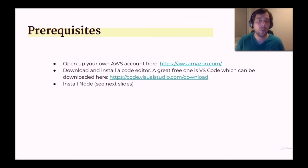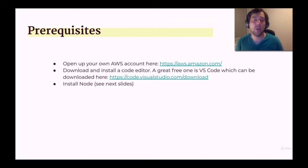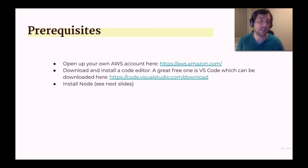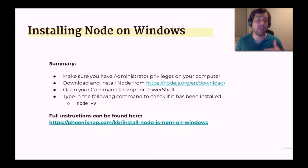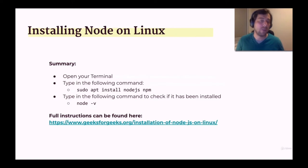What are some prerequisites for this course? First and foremost, if you want to deploy on AWS, you'll need an AWS account, which you can open at aws.amazon.com. Second, you'll need a code editor — I'm going to be using VS Code because it's a great and free code editor. I also recommend JetBrains WebStorm if you have it, but that's a paid editor. Finally, you'll need to install Node, which is very easy — just a couple of steps on Windows, Linux, or Mac.